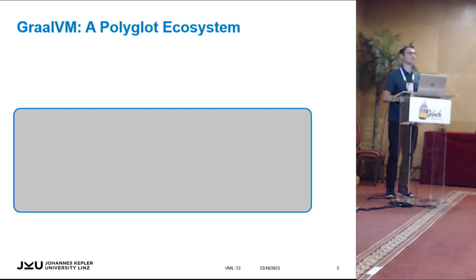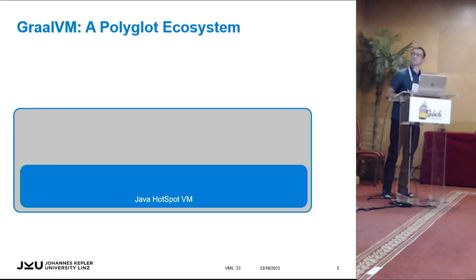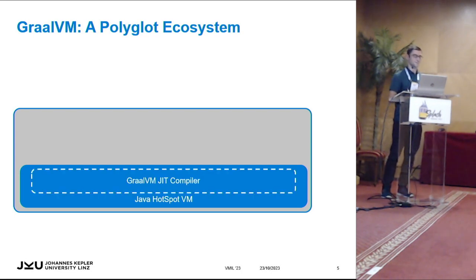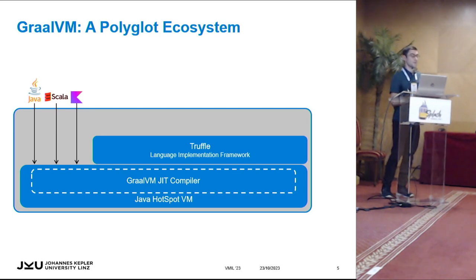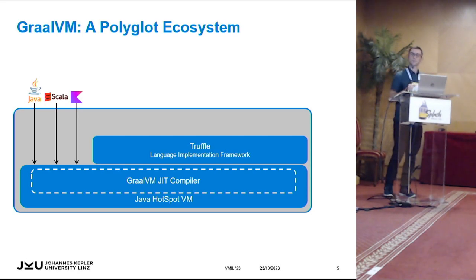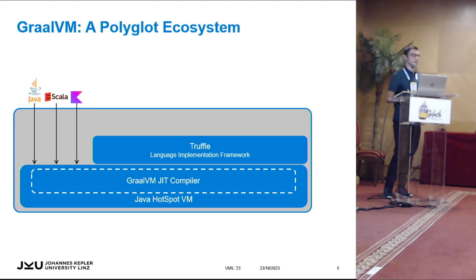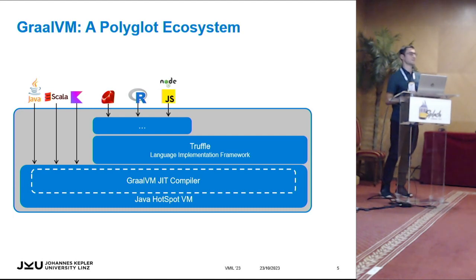All who attended the keynote already know the VM that rules it all: GraalVM. It's based on the Java HotSpot VM, takes Java bytecode, and has a highly aggressively optimizing JIT compiler — the GraalVM JIT compiler. Languages that compile down to Java bytecode, such as Java, Scala, or Kotlin, can directly use this compiler.